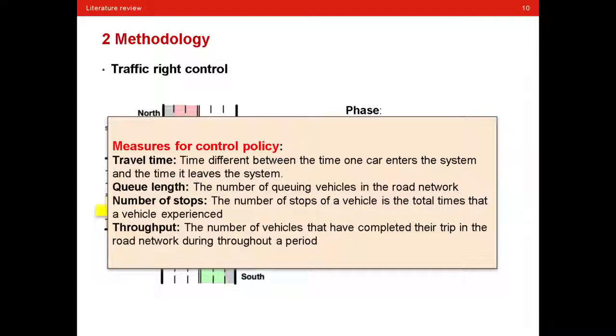The other measure is queue length, the number of queueing vehicles in the road network. And we have number of stops. The number of stops of a vehicle is the total times that a vehicle stops before the intersection.